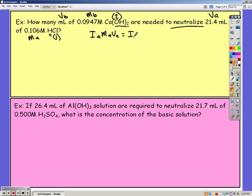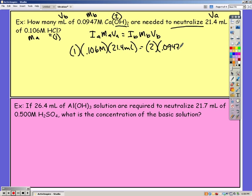So using my titration equation and plug in all my acid information and all my base information. Dividing both sides by 2 times 0.0947 I get my volume to be 11.98 milliliters.